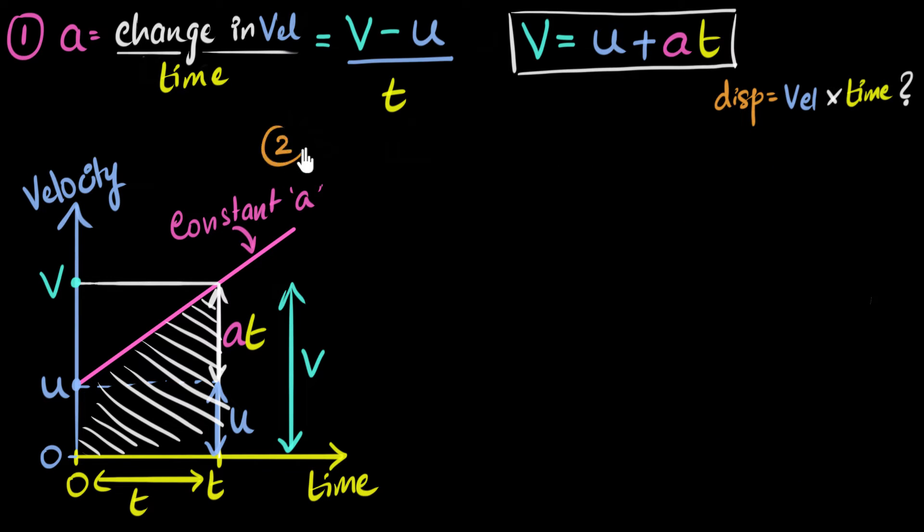So, the second derivation is displacement S is going to be the area under this graph. Now, how do we calculate that area? Well, if you look at this graph carefully, you can see two shapes, one rectangle and one triangle. So, we can say, the area is going to be the area of the rectangle plus the area of this triangle. Now, again, a good time to pause the video and see if you can try this yourself. Please try this because I'm sure you know how to calculate the areas of these two shapes.